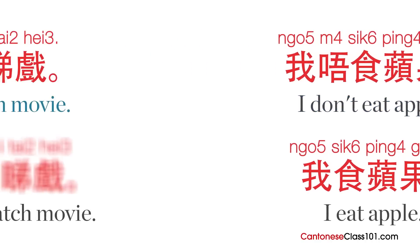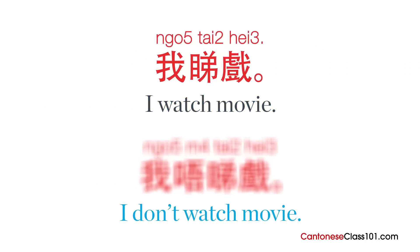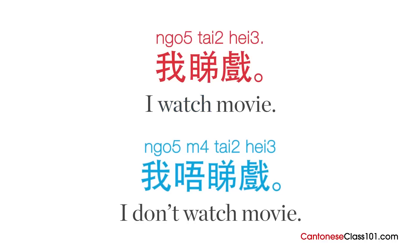Now let's make the sentence 'I watch movie' negative. To recap, 'I watch movie' in Cantonese is 我看戲. 看 is the verb 'watch'. So the negative version would be 我唔看戲 — I don't watch movie. Pretty easy, right?